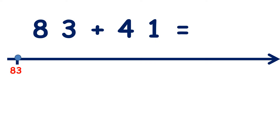Here we have 83 plus 41, and to answer this we need to know how to count on in 10s crossing 100. So if we're adding 41, we need to add 4 tens and 1 unit.